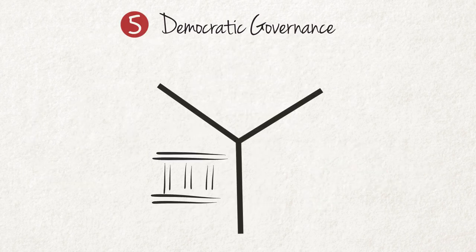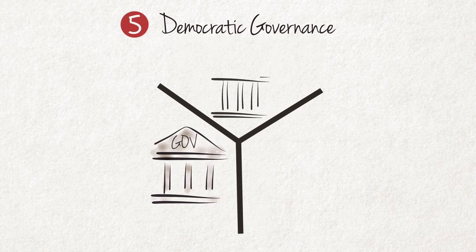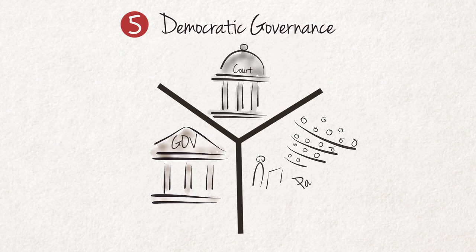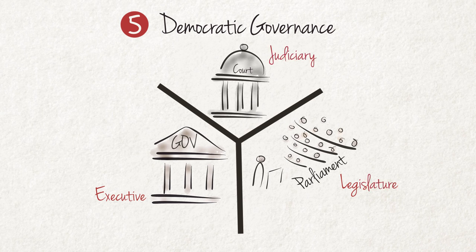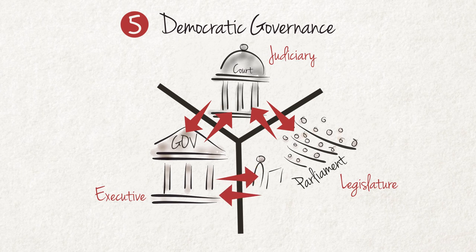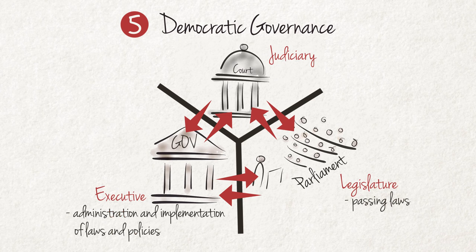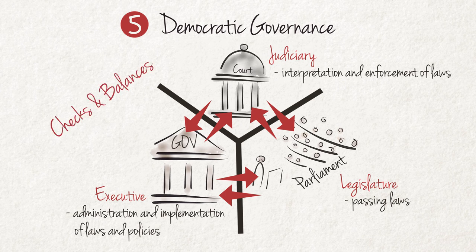The fifth key feature of democracy is democratic governance. This concerns the way in which a democratic government is organized and functions. What happens between elections is very important for a vibrant democracy. Democratic government is characterized by the separation of powers. State power is divided into three branches: the executive, the legislature and the judiciary. Each branch checks the power of the other two so that there is a balance of power between them. The legislature is responsible for passing laws while the executive is responsible for the administration and implementation of the law and other policies. Together with this goes the independence of the judiciary in the interpretation and enforcement of law. This system of checks and balances is designed to prevent the abuse of power.